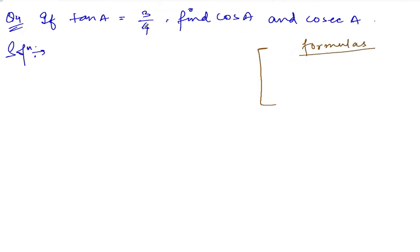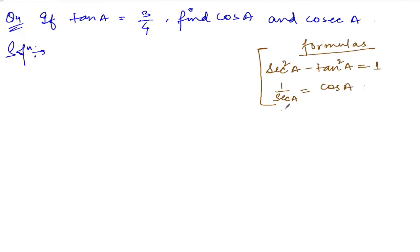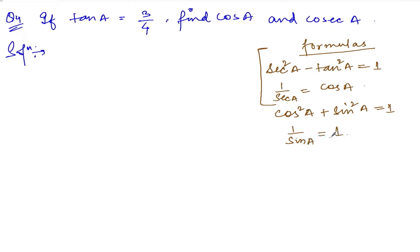The formulas we are going to use are: first, sec²(a) - tan²(a) = 1. Second, 1/sec(a) = cos(a). Third, cos²(a) + sin²(a) = 1. And lastly, 1/sin(a) = cosec(a). These are the four formulas we are going to use in this question.